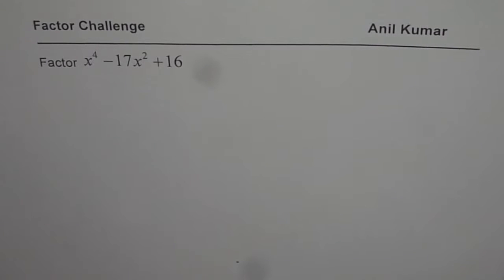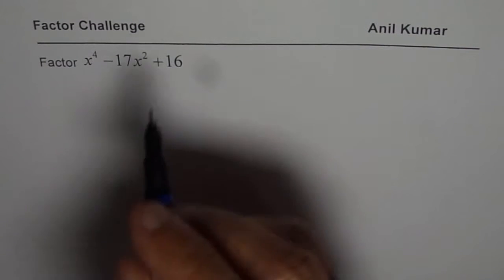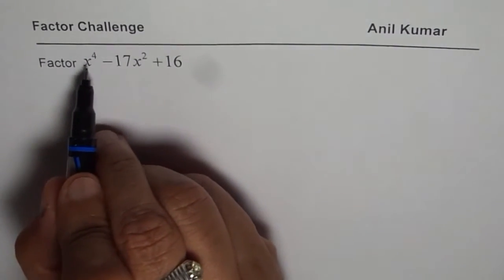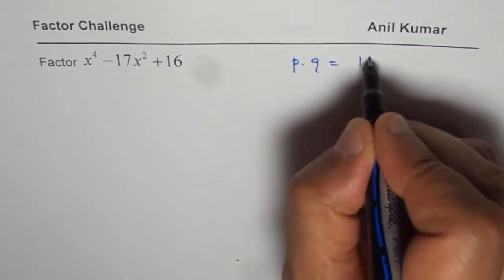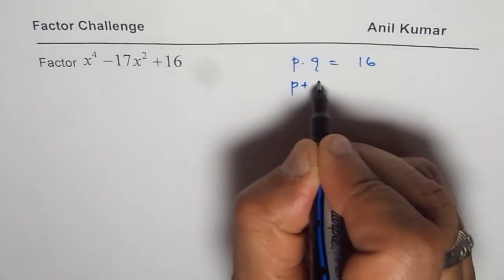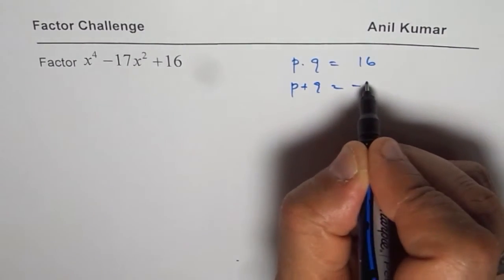Now the strategy is same as we apply to normal trinomials, we will use product and sum. Since the coefficient of x to the power of 4 is 1, we are looking for product of two numbers to be 16 and sum of two numbers to be minus 17.